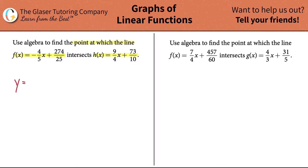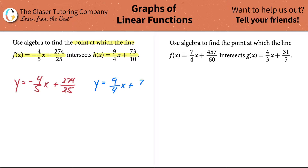So y equals negative 4/5 x plus 274/25. I know it looks intimidating. And the second equation: y equals 9/4 x plus 73/10.